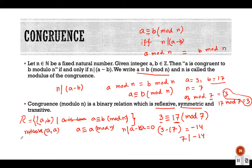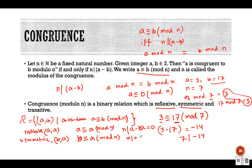Now, is the relation symmetric? If a is congruent to b, is b congruent to a? If n divides a minus b, then n will also divide b minus a, since that is just a negative value. For example, if 7 divides 3 minus 17, then 7 will also divide 17 minus 3. So if a is congruent to b, then b is congruent to a — the relation is symmetric.